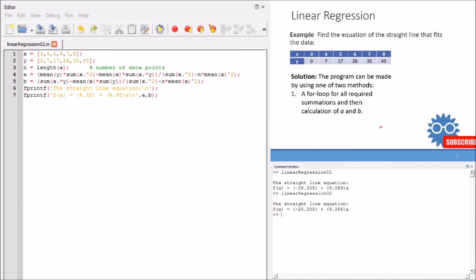Now we can see the result. If we plot the resulted equation, we will get this shape as you see here. This is the method that we can use to obtain the straight line equation that fits a set of experimental or statistical data.